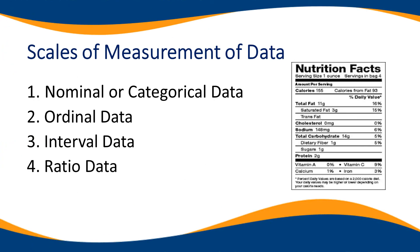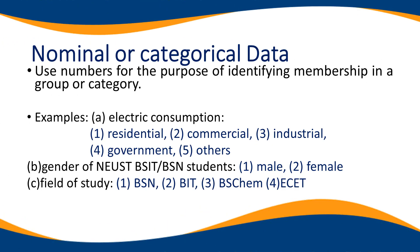There are four scales of measurement of data. These are: number one, nominal or categorical data; number two, ordinal data; number three, interval data; and number four, ratio data. Nominal data uses numbers for the purpose of identifying membership in a group or category. Examples include electrical consumption categories — residential, commercial, industrial, government, and others.